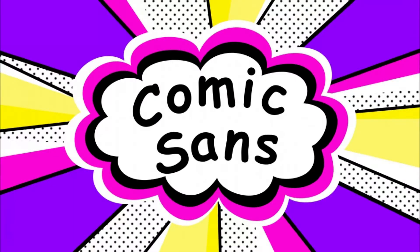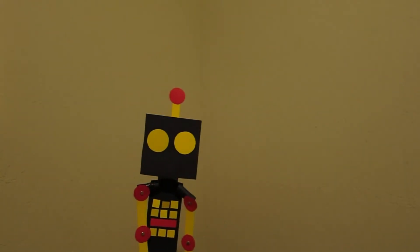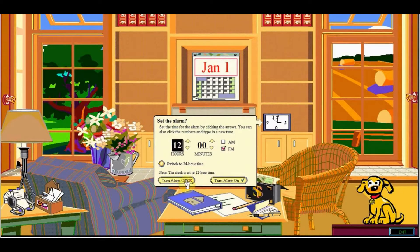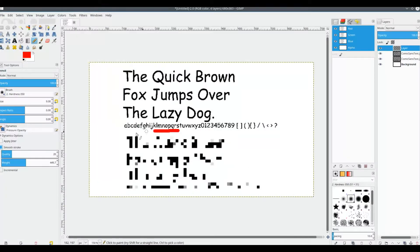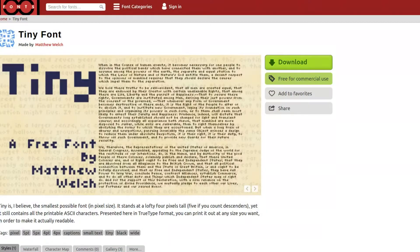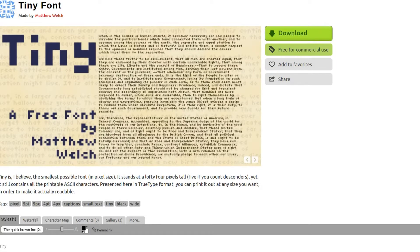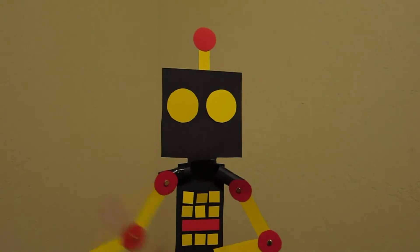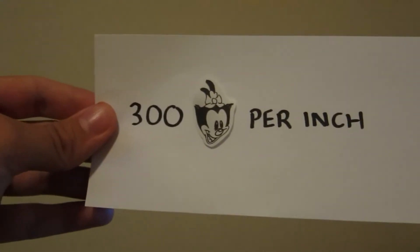At first, you consider Comic Sans, because even though it is ugly, it was originally designed with the purpose of being easily readable at a low resolution during the low-res era of Microsoft Bob. But even Comic Sans isn't readable at five pixels tall. Enter tiny font, literally designed to be really small. Its largest character, the pound symbol, is just five pixels wide by five pixels tall, 25 pixels total. But how many pixels can you fit on your index card? Well, printers work with dots, not pixels. And most printers can print at least 300 dots per inch. That's 90,000 dots on just one square inch of paper. Your index card is 15 square inches, so it should be able to fit 1,350,000 dots.